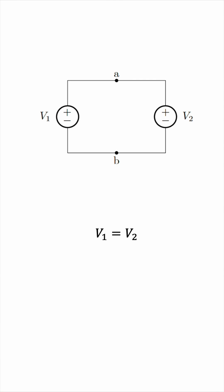That is, if V1 is exactly equal to V2. Otherwise, this connection would not be permissible. It would be an invalid connection.